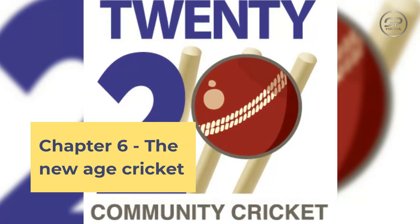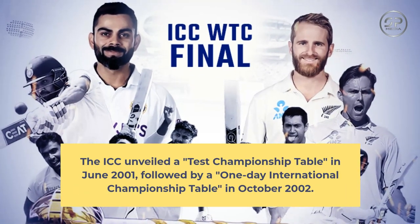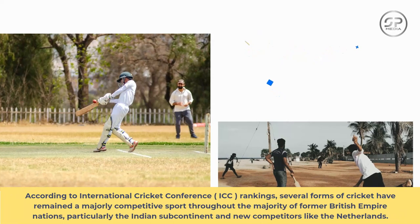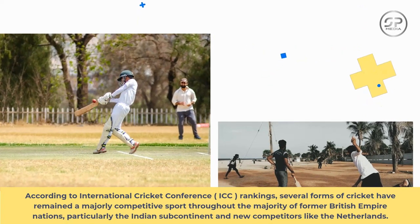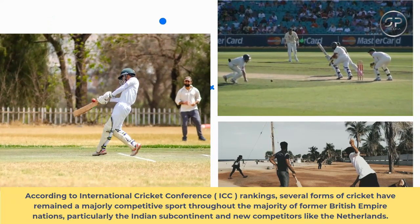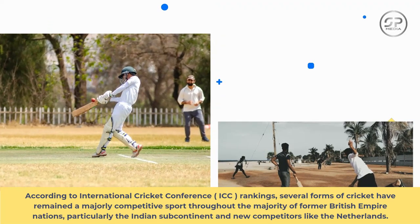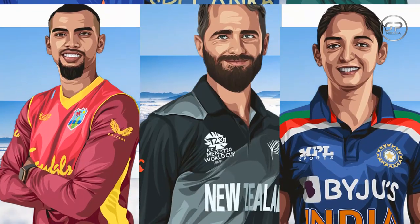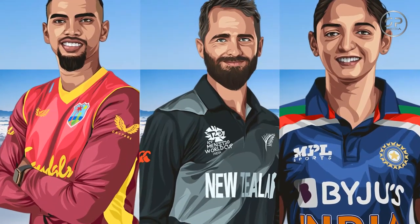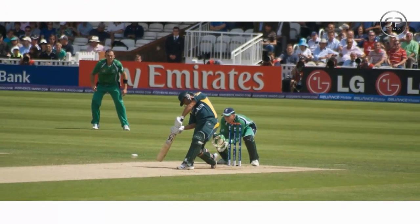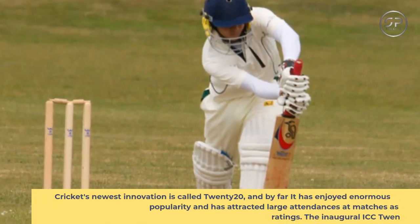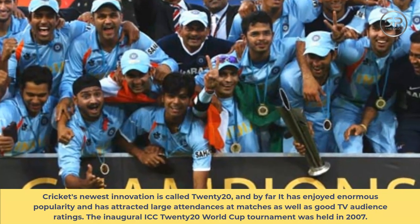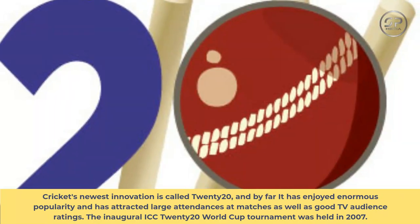Chapter six: the new age of cricket. The ICC unveiled a Test championship table in June 2001, followed by a one-day international championship table in October 2002. Several forms of cricket have remained a majorly competitive sport throughout most former British Empire nations, particularly the Indian subcontinent. In 2017, Ireland and Afghanistan were added, bringing the total number of nations with full ICC membership to 12. Cricket's newest innovation, T20, has enjoyed enormous popularity, attracting large attendances and strong TV ratings. The inaugural ICC T20 World Cup was held in 2007.